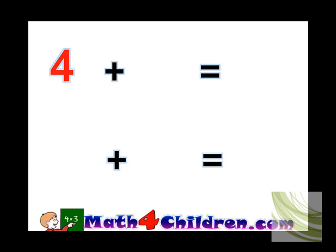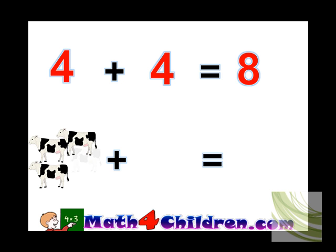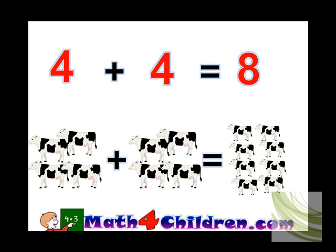4 plus 4 equals 8. 4 cows plus 4 cows equals 8 cows.